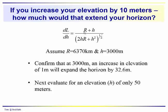Now, if you increase your elevation by 10 meters, this is the dL/dH. This is the quantity that we need to evaluate. We're going to assume that we have a radius of the earth 6,370 kilometers and we're at a height 3,000 meters. At 3,000 meters, an increase in elevation of one meter would be 32.6 meters, 10 meters would be 326 meters. So you get some good advance on your territory by trying to get a meter higher.